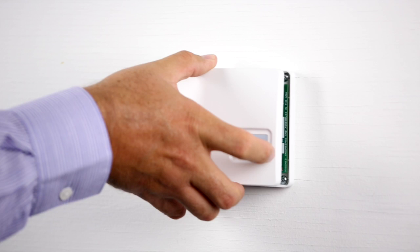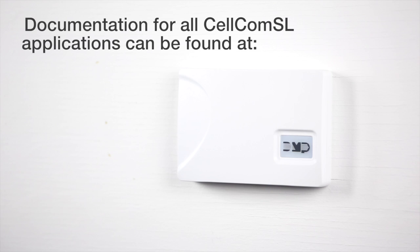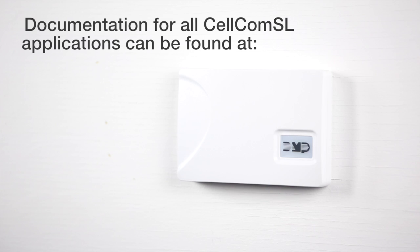You have successfully deployed the new DMP Cellcom SL on an existing 12-volt DC dialer panel. Documentation on this application and other available applications for the Cellcom SL Universal Cellular Alarm Communicator can be found at DMP.com.